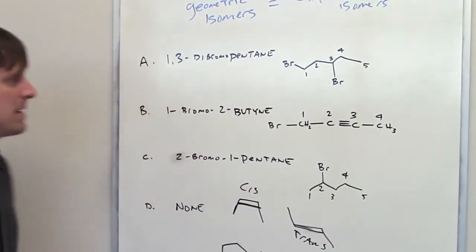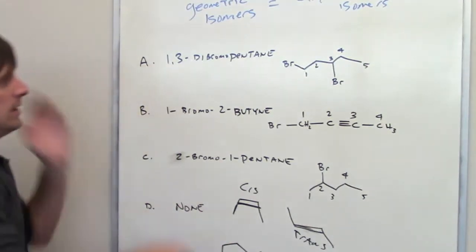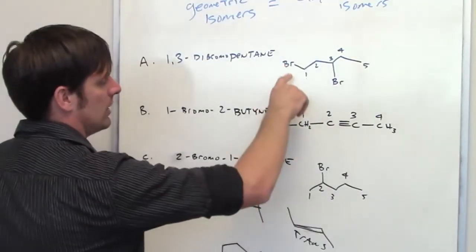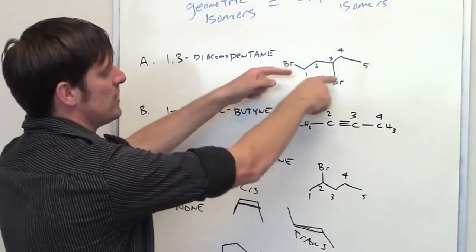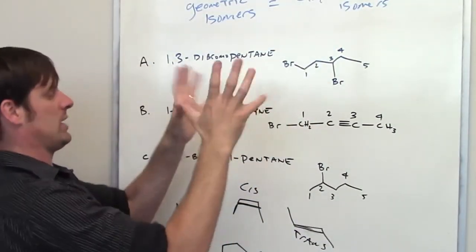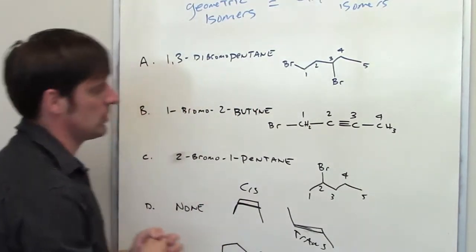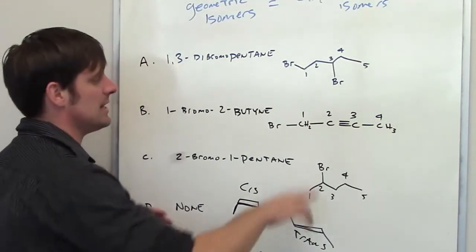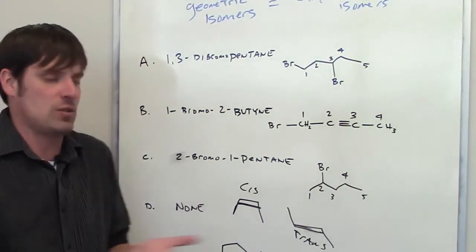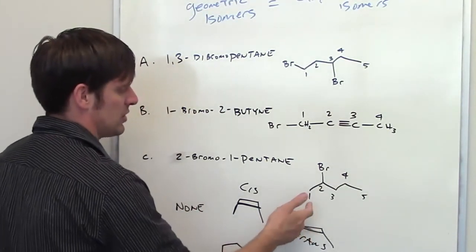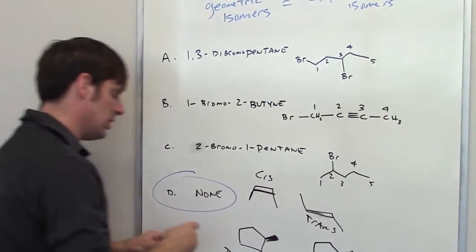Can any of these given molecules exist as geometric isomers? Geometric isomers require either a ring or a double bond. The first molecule has no ring and no double bond — it's all single bonds which rotate freely 360°, so the bromines aren't locked in any position. The second is an alkyne, which is completely linear — there's no cis or trans possible. The third has no second bromine, no double bond, and no ring. Therefore, none of these can exist as geometric isomers — the answer is D.